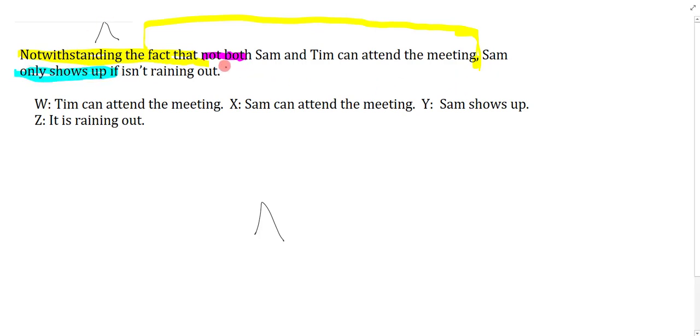Let's do the easy one, which is the not both Sam and Tim can attend the meeting. I'm just going to write the standard form of not both, which is negation with an and in the middle. Sam can attend the meeting is X, Tim can attend the meeting is W, so I'll write XW.